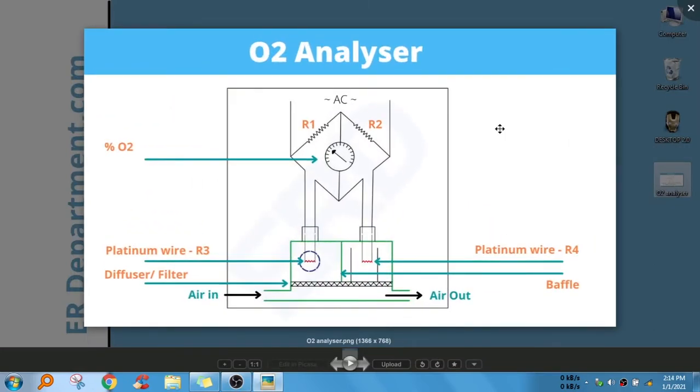Oxygen analyzer works on the principle of Wheatstone's bridge. You might be remembering if R1 by R2 is equal to R3 by R4, then there won't be any current passing through this meter and the bridge is balanced. That is the basic Wheatstone's bridge principle.